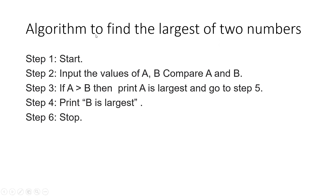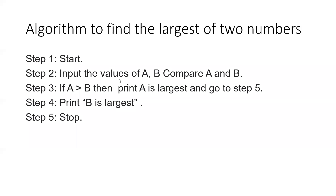Let us see another algorithm to find the largest of two numbers. Read the values of A and B. Step 2: compare A and B. Step 3: if A is greater than B, then print A is the largest and go to step 5. Step 4: print B is the largest. Step 5: stop.